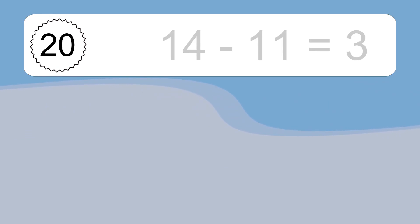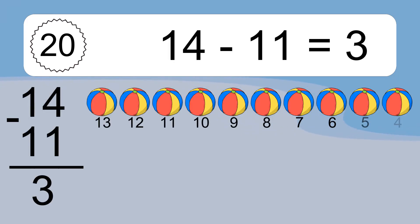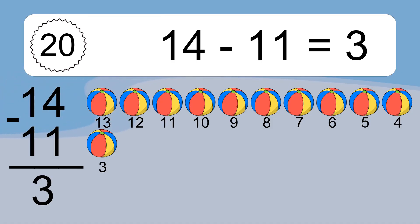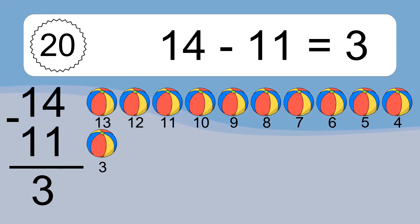14 minus 11 equals what? 14 minus 11 equals 3. Let's count it: 13, 12, 11, 10, 9, 8, 7, 6, 5, 4, 3.